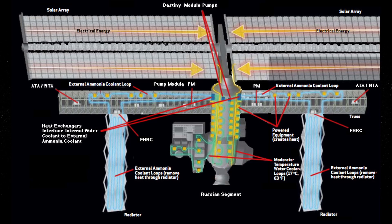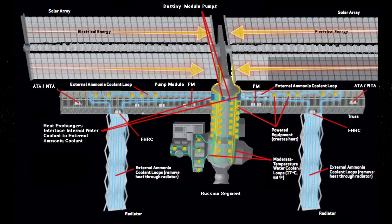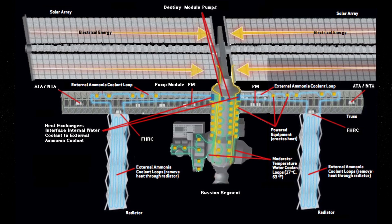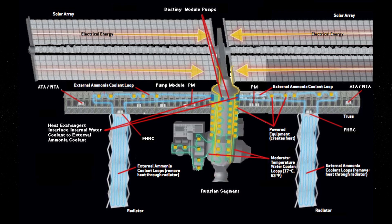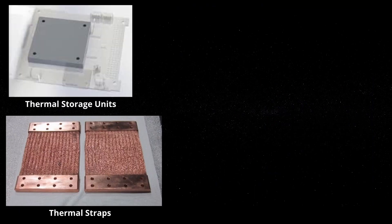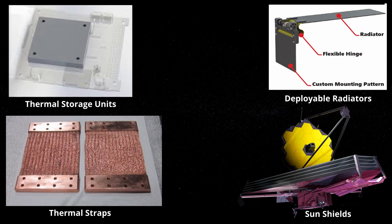For satellites not nearly as complex as the International Space Station, their thermal management systems are much simpler and require fewer components. They utilize a combination of features often including thermal straps, thermal storage units, deployable radiators, and sunshields.